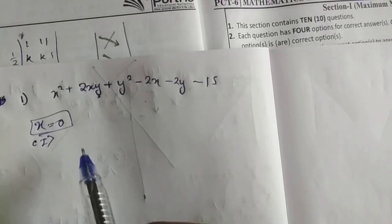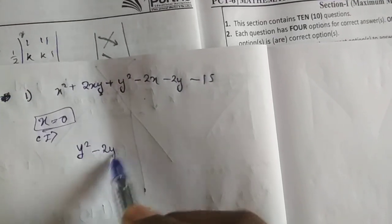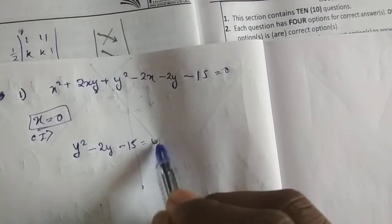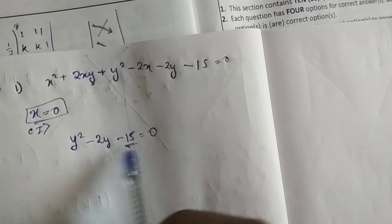Putting x equals to 0, we get y square minus 2y minus 15 equals to 0. If we try to factorize 15, so 3 and 5.